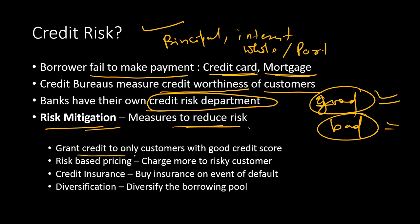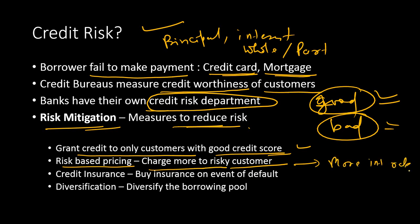One way to mitigate credit risk is to grant credit only to customers with good credit scores. Another way is risk-based pricing, where banks charge higher interest rates to riskier customers — those with lower creditworthiness. Banks also sometimes purchase credit insurance against loans, which covers some part of the credit risk.